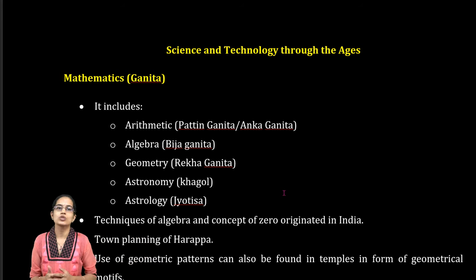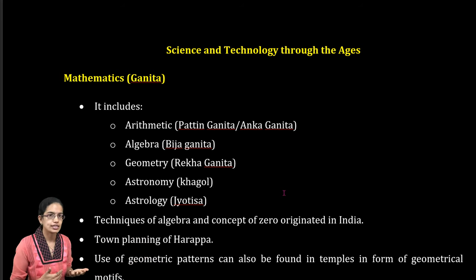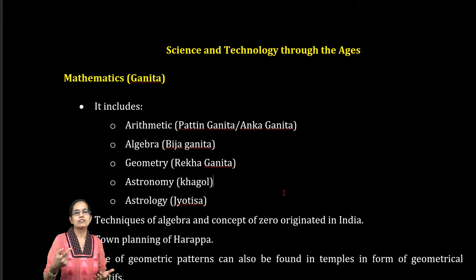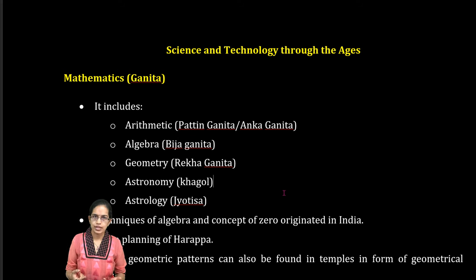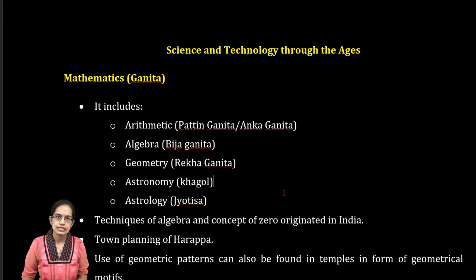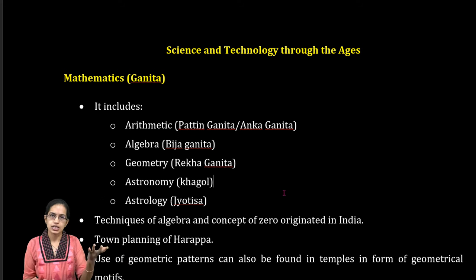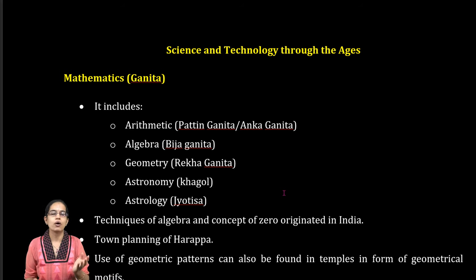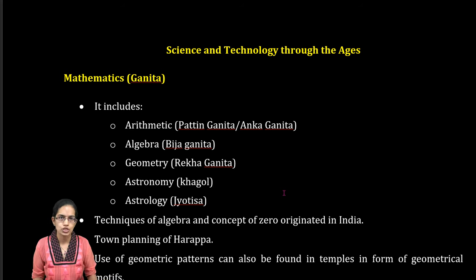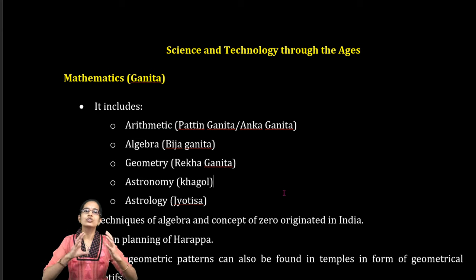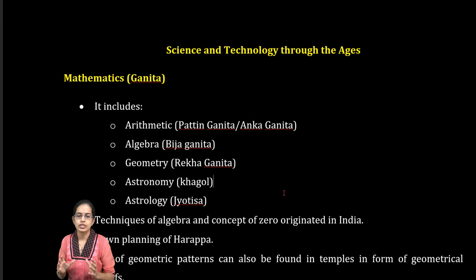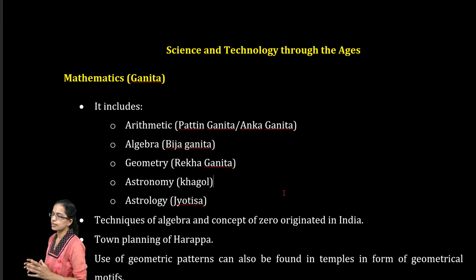Mathematics, which was known as Ganith, had five important components: Rekha Ganith, which was geometry; Beach Ganith, which was algebra; Anka Ganith, which is arithmetic; Khagol, which is astronomy; and Jyotish, which is astrology. Those five were the important constituents of mathematics during that time.